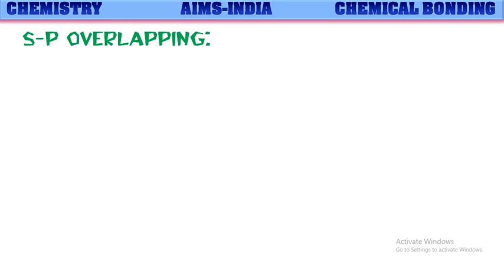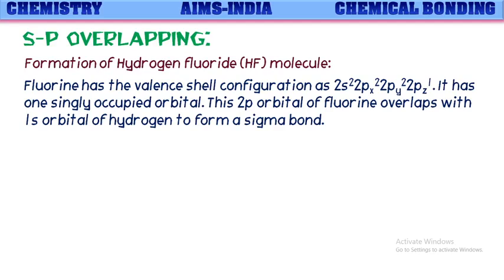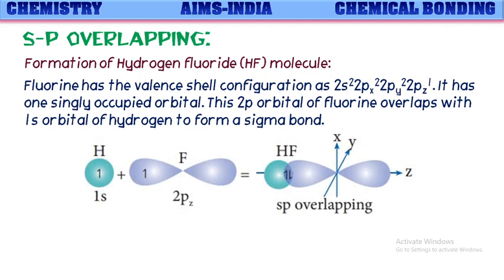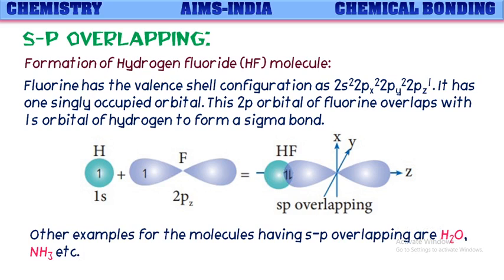Next, let us see sp overlapping using the example of hydrogen fluoride (HF). Fluorine has the valence shell configuration 2s² 2px² 2py² 2pz¹ — it has one singly occupied orbital, 2pz¹. This 2pz orbital of fluorine overlaps with the 1s orbital of hydrogen to form a sigma bond through sp overlapping. Other examples of molecules with sp overlapping are H₂O (water) and NH₃ (ammonia), where s orbitals of hydrogens overlap with p orbitals of the central atoms oxygen and nitrogen respectively.